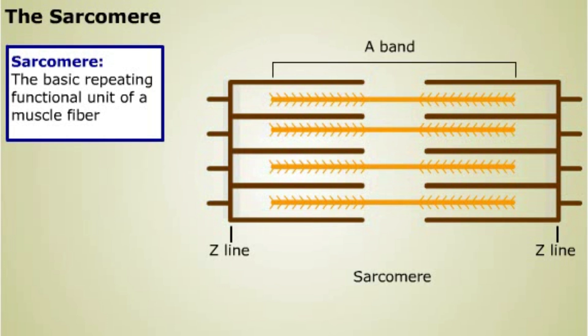When the muscle is at rest, the thick and thin filaments don't overlap completely. Next to the Z-lines is a region where there are only thin filaments called the I-band.